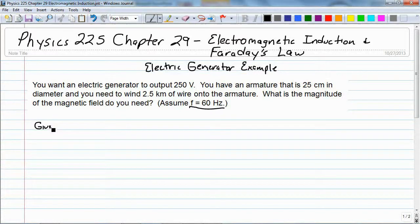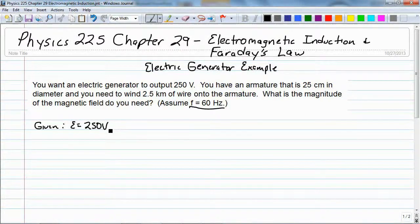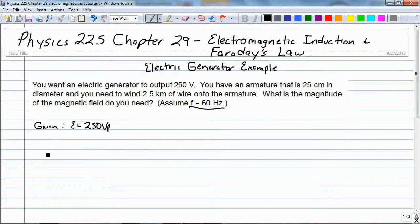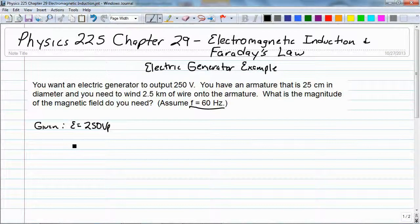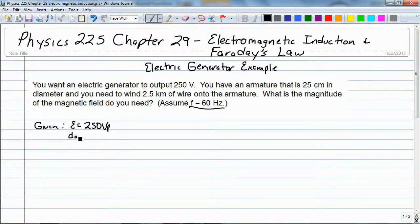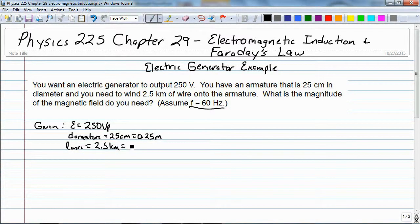So we have given E is equal to 250 volts, and we're doing peak here. If it was RMS, we'd have to do a factor of the square root of 2. The diameter of the armature is 25 centimeters, which is 0.25 meters. The length of wire is 2.5 kilometers, and that's 2,500 meters, and the frequency 60 hertz.